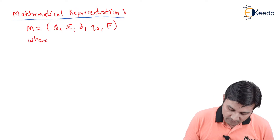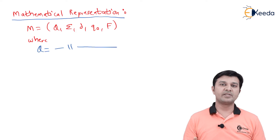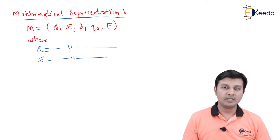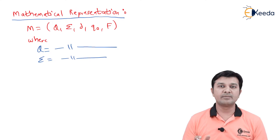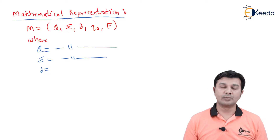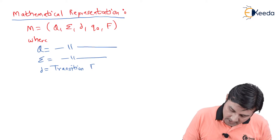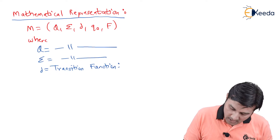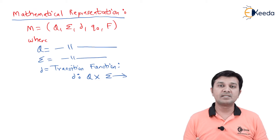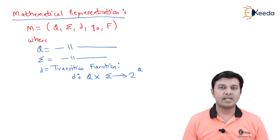Where Q is nothing but the finite set of states, same as that of DFA. Then I have Σ which is called as the input alphabet — the meaning of that remains the same. Next I have δ, which is also called as the transition function. However, δ in NFA is not represented as Q × Σ → Q; instead it is represented as Q × Σ → 2^Q.